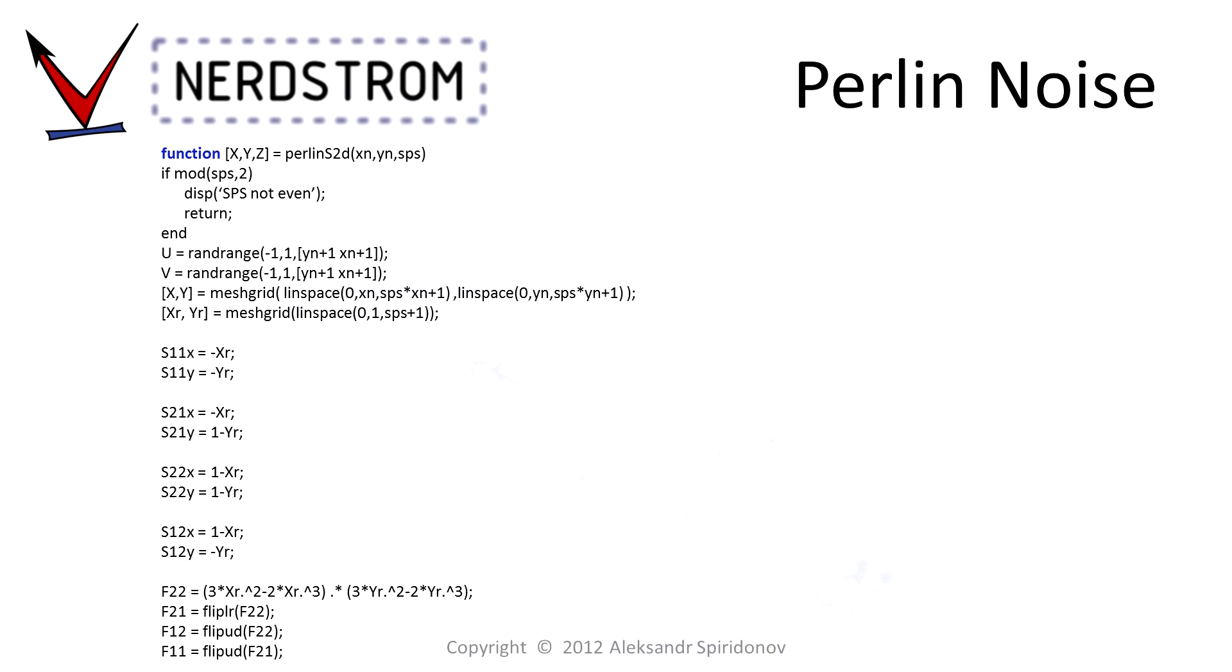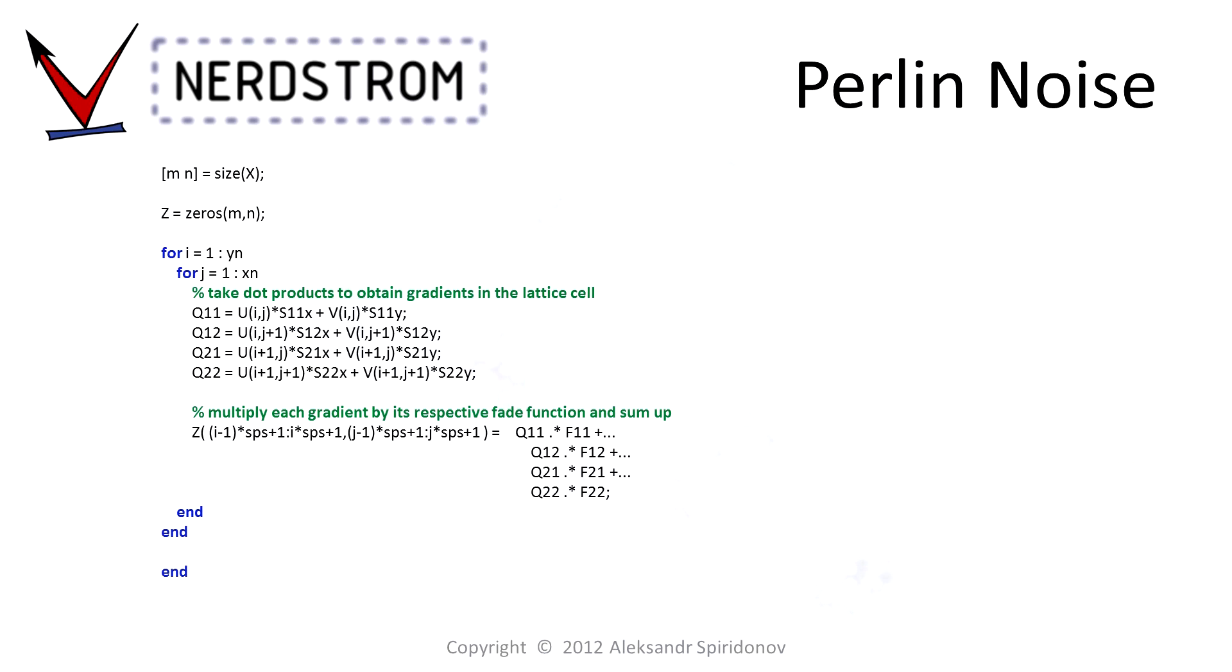The nested for-loop, then instead of looping over every point in the entire region, loops over every cell in the lattice and performs fairly quick matrix operations on it. The gradients are computed for every point in the cell at the same time, then the interpolant weights are applied, and the matrix is added to the output array Z.